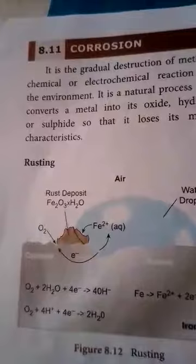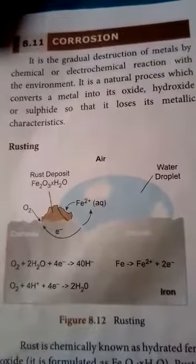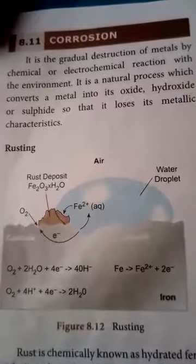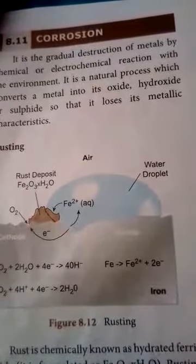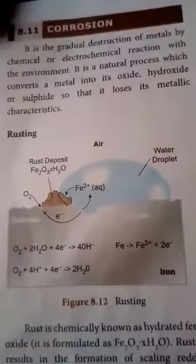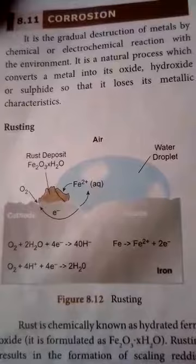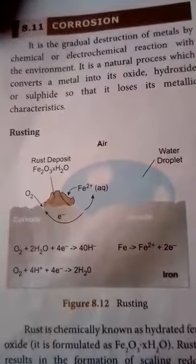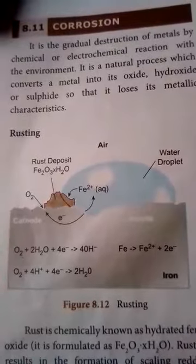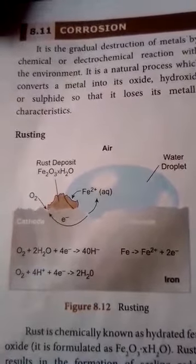Here is an example. Rust deposit on ferrous material with water droplets. Iron (Fe) loses electrons to form Fe²⁺ ions, which then react with oxygen to form Fe₂O₃ oxide.